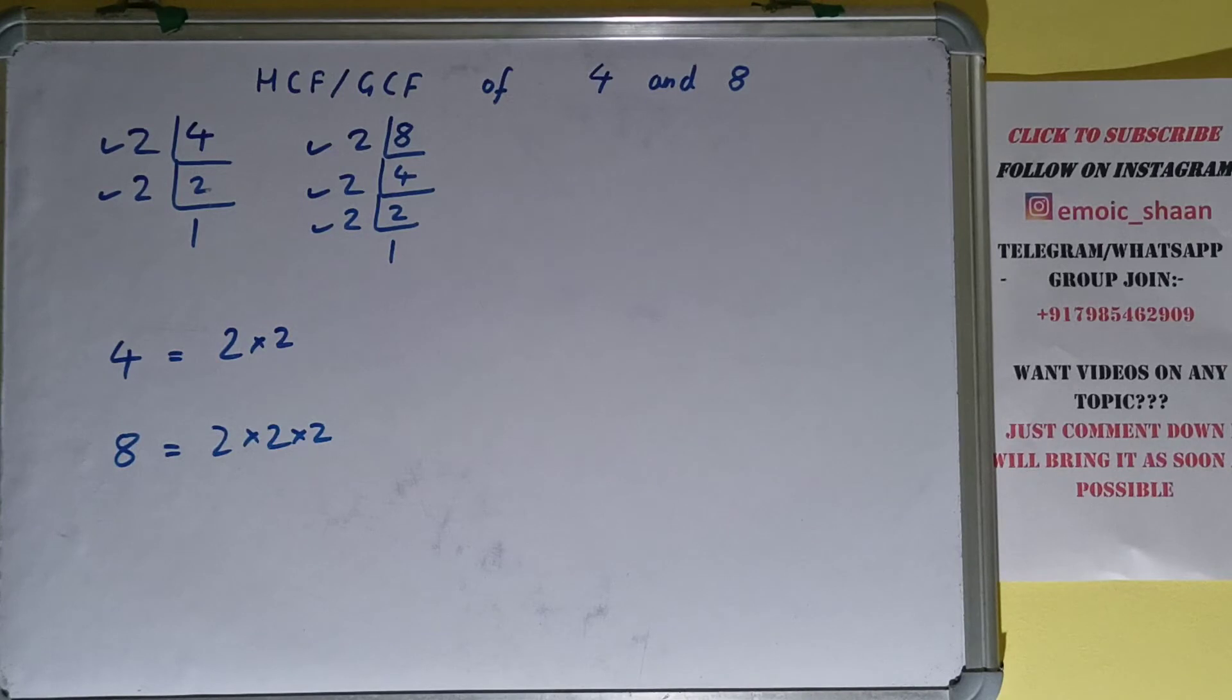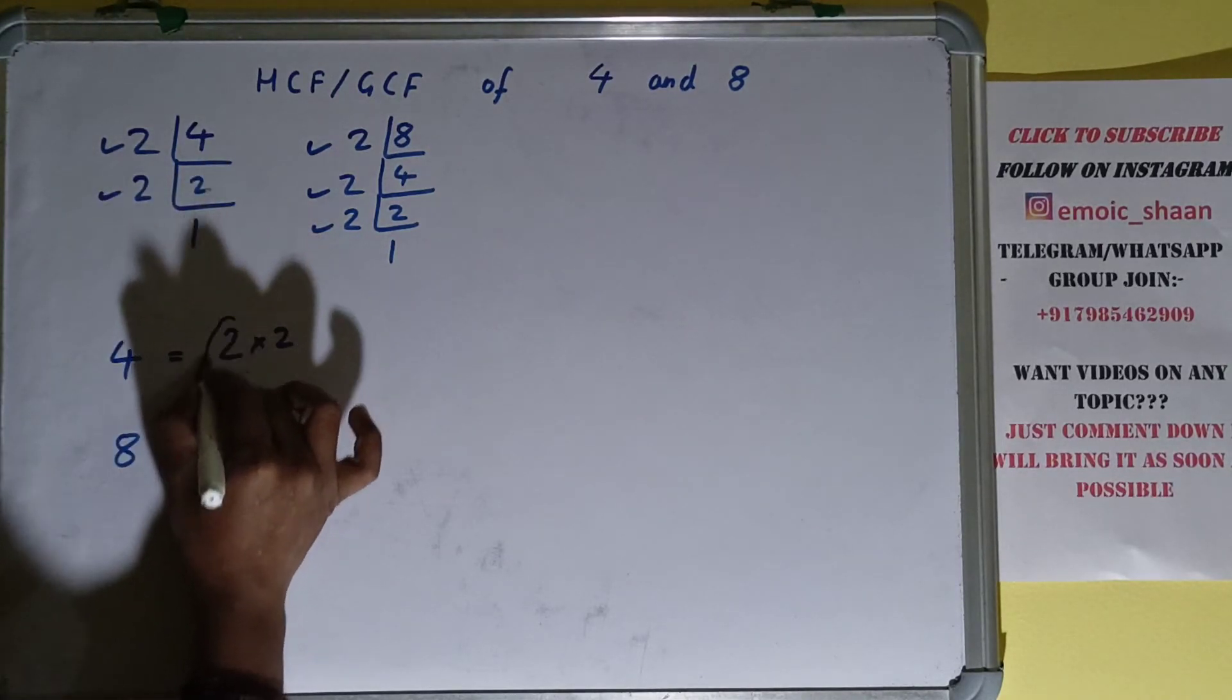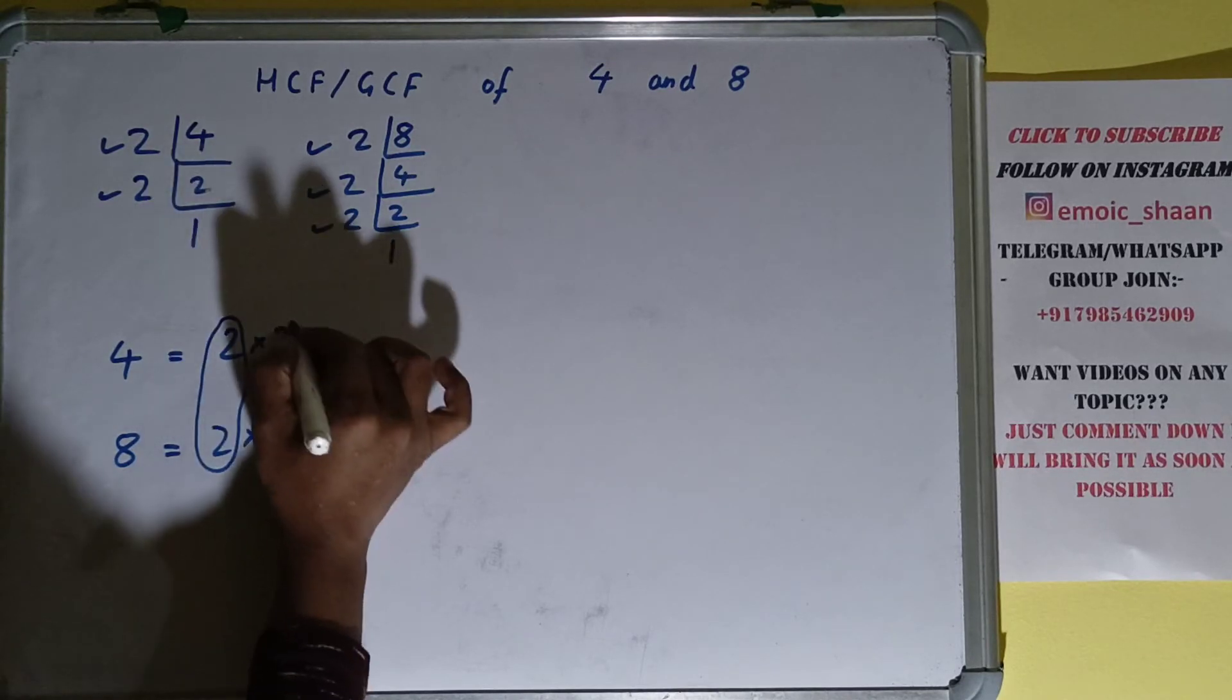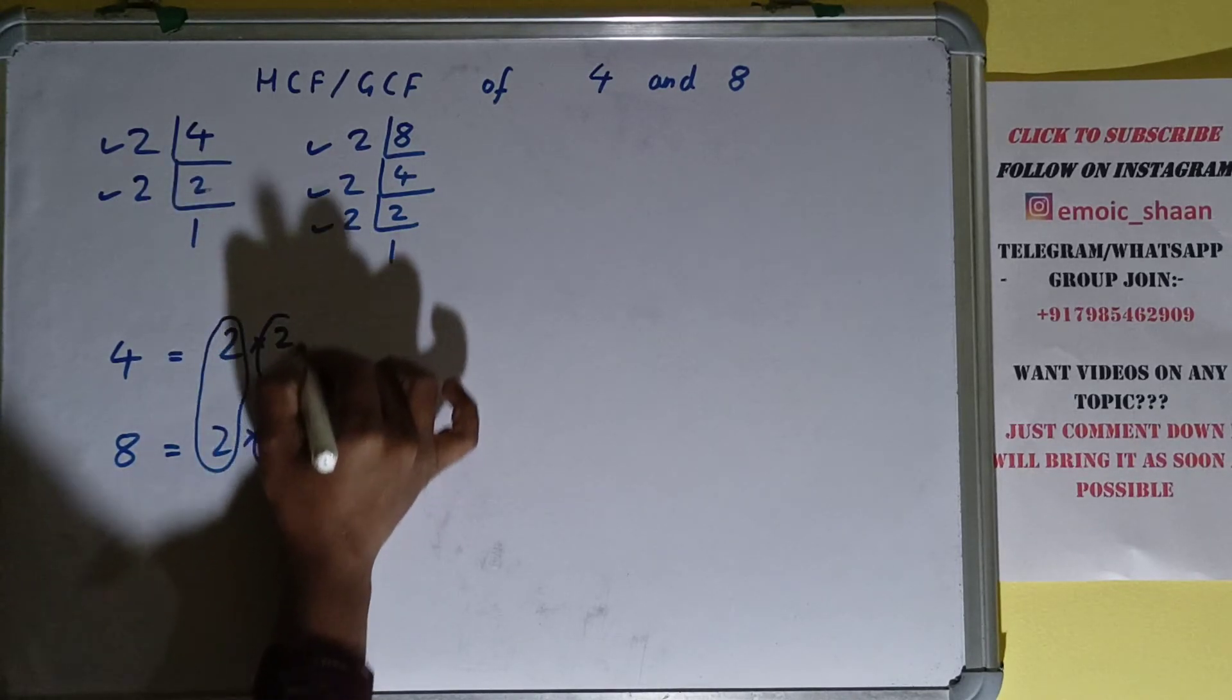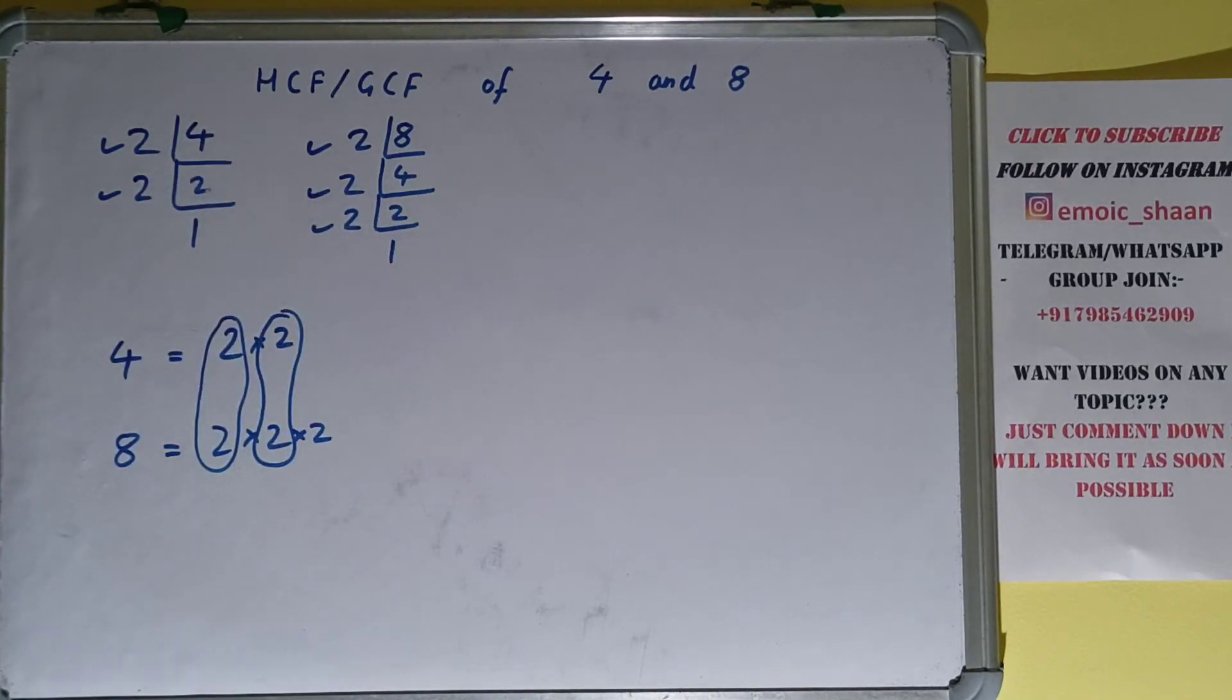Now the next step is to circle out the common factors between them. So there is one pair of 2 in common, there is one more pair of 2 in common, right? Is there anything more in common? The answer is no.